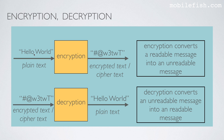The readable text is called a plain text. Encryption converts a readable message into an unreadable message. The encrypted text is used as input for the decryption method. The decryption method converts the encrypted text into a plain text — in this case, Hello World. Decryption converts an unreadable message into a readable message.